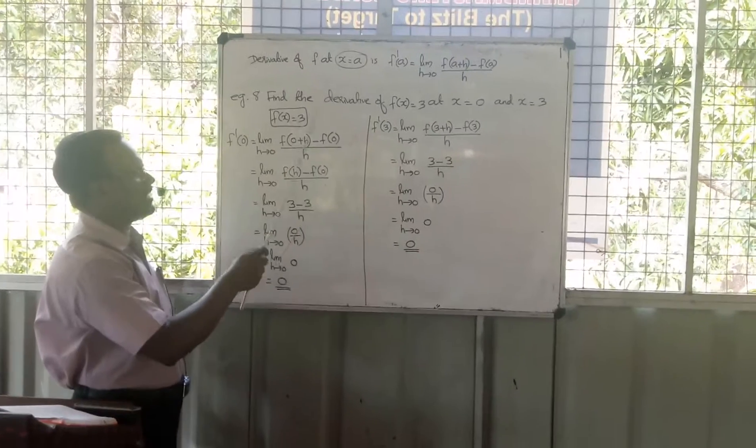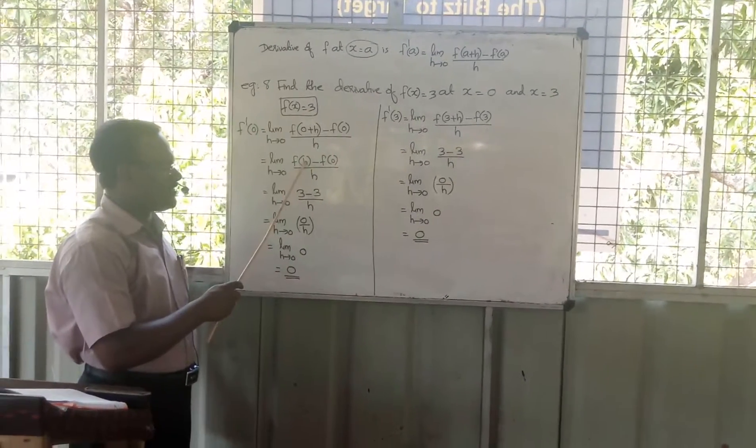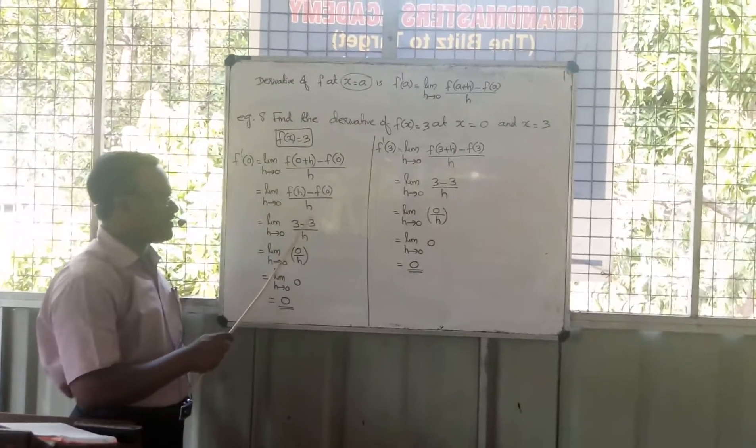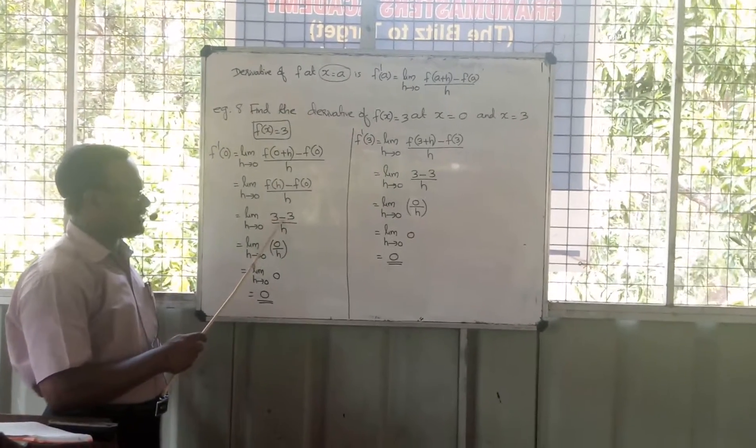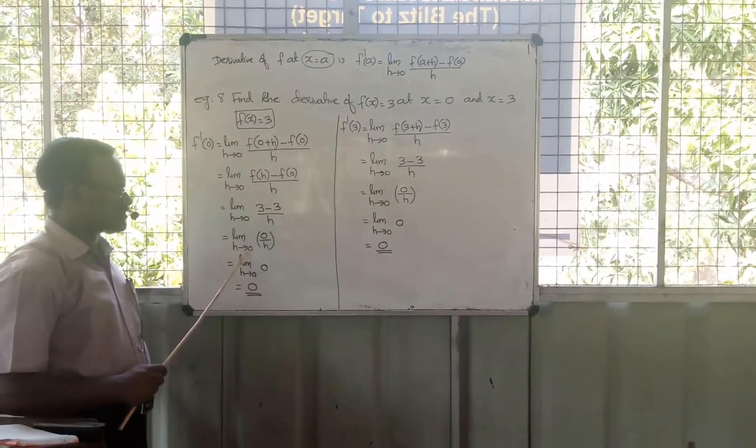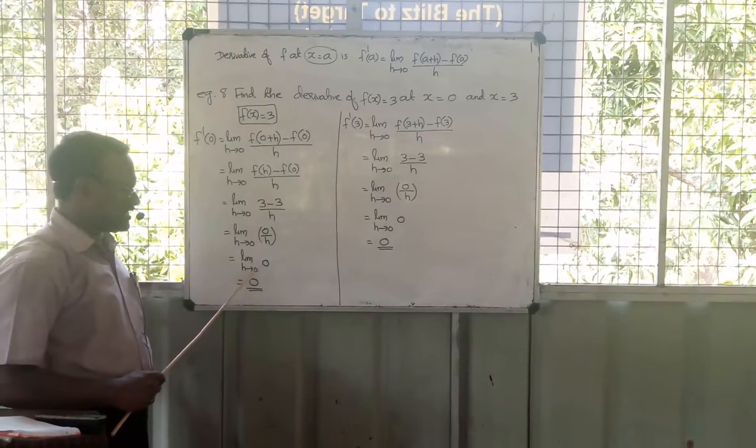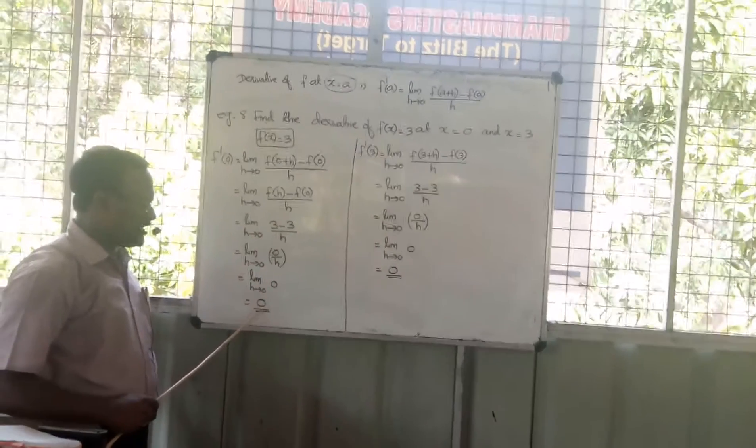f(h) = 3, f(0) = 3. So 3 - 3 divided by h equals limit h tends to 0, 0 by h, equals limit h tends to 0, 0. So the answer is 0.